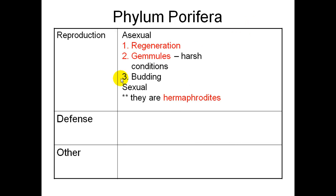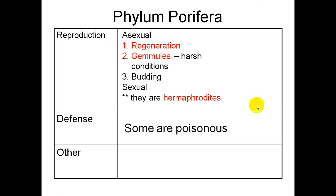For reproduction, they do both asexual and sexual reproduction. For asexual reproduction they will regenerate, can form gemmules in harsh conditions to help them survive, and they will bud. For sexual reproduction, they have sperm and egg that can join together. Sponges are hermaphrodites and can produce both, but not at the same time. For defense, some sponges are poisonous. Also note that a sponge cannot move — once it attaches to a rock or the bottom of the ocean, it no longer moves.